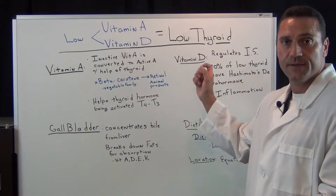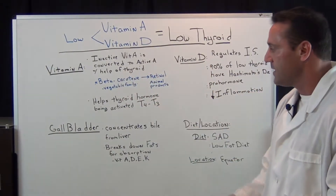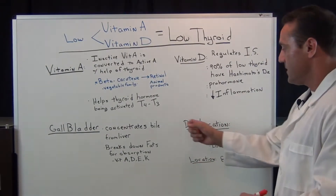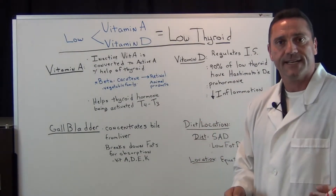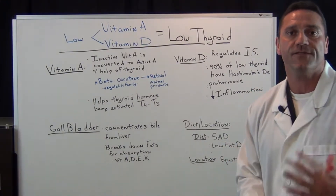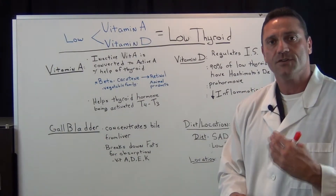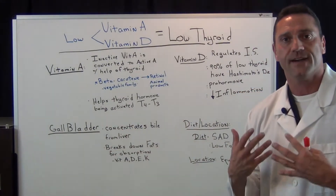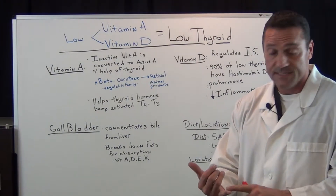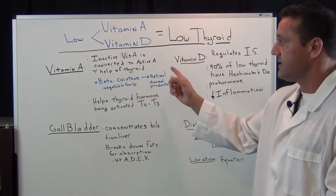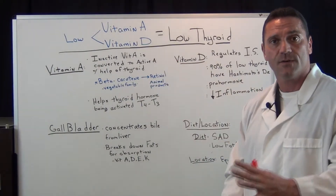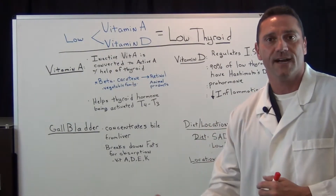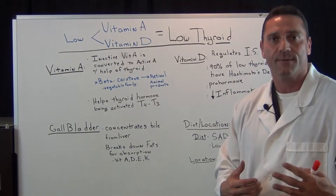We need vitamin A and vitamin D for thyroid function. So what happens if we have a bad diet — like the standard American diet with too much fat? You're overtaxing the gallbladder. It can't break down all those fatty substances, so you get malabsorption of vitamins A, D, E, and K. This is where you get low thyroid symptoms.